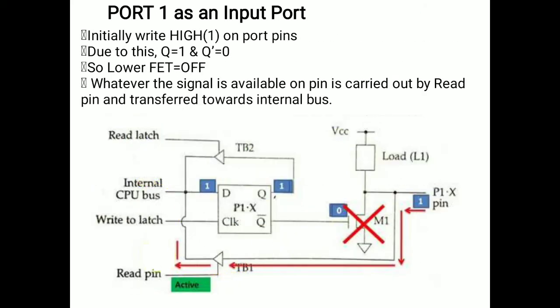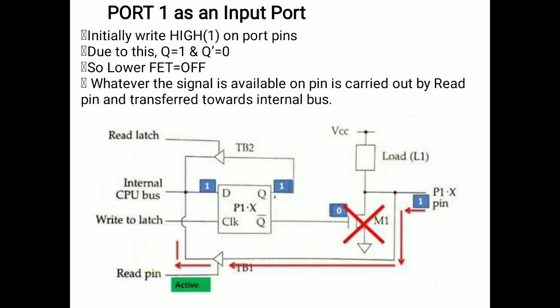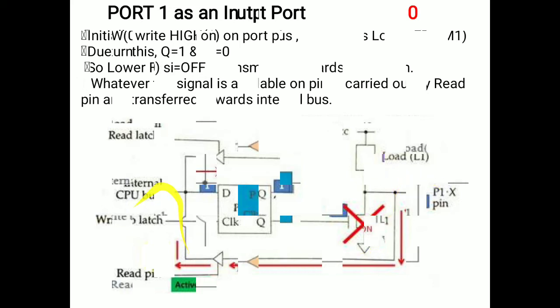The signal follows towards the input side of the CPU. This is the input function of Port 1 — the necessary condition is that the read buffer must be activated so we are able to fetch the contents towards the internal CPU bus. When using Port 1 as an input port, it is not necessary to analyze what content (0 or 1) is available on the port pin that will be fed to the CPU — whatever signal is there, either 0 or 1, it will be directly considered as-is.